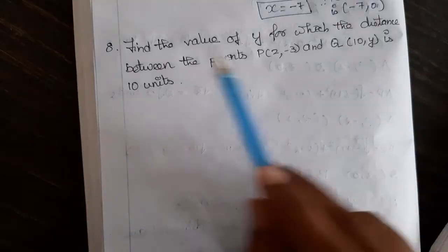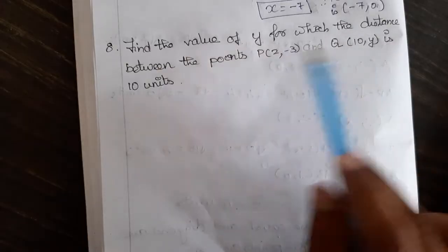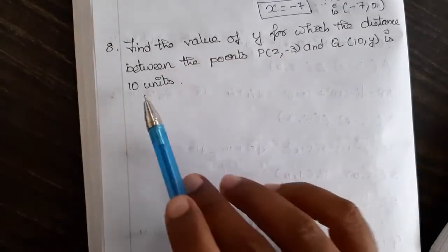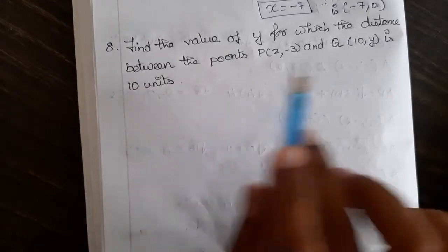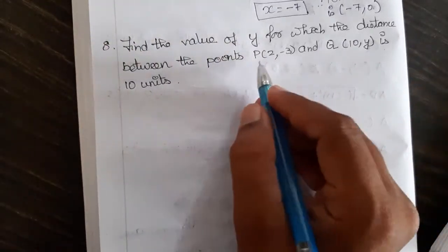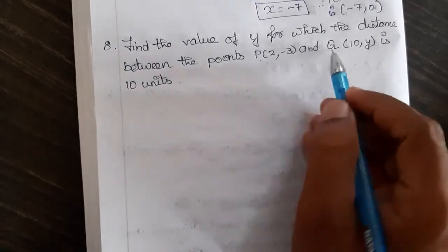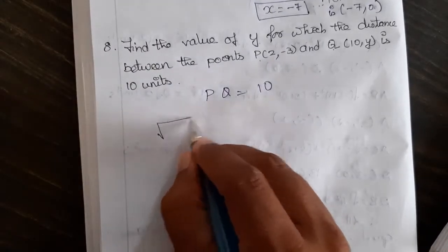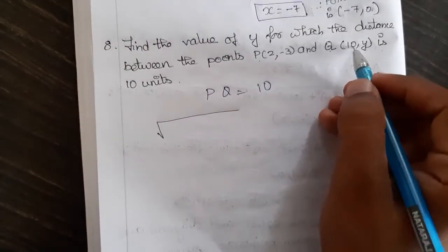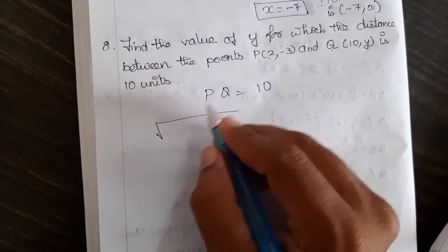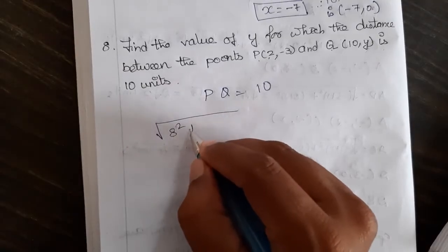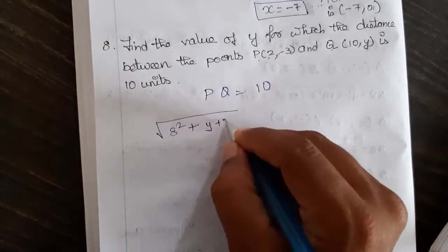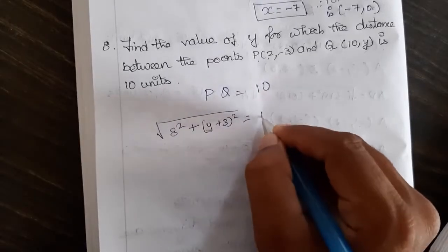Here we go for the next problem: find the value of y for which the distance between point P(2, -3) and Q(10, y) is 10 units. The distance is given and we have to find y. Distance PQ equals square root of (10 minus 2)² plus (y minus (-3))², which is square root of 8² plus (y + 3)² = 10.